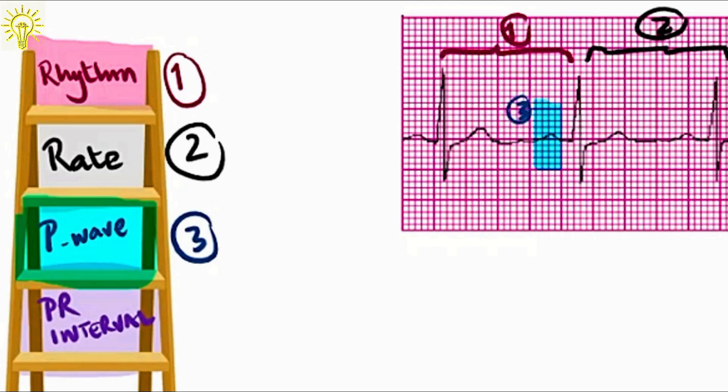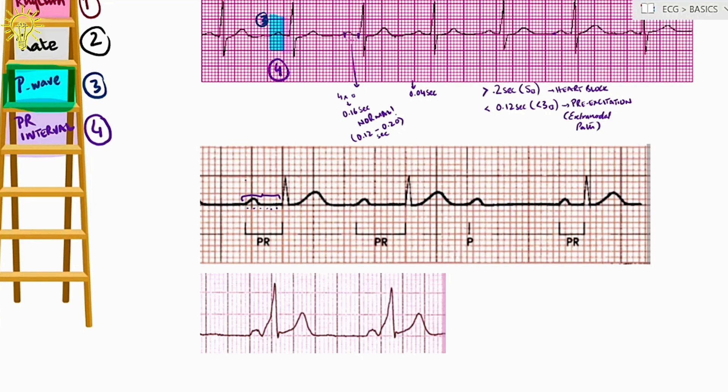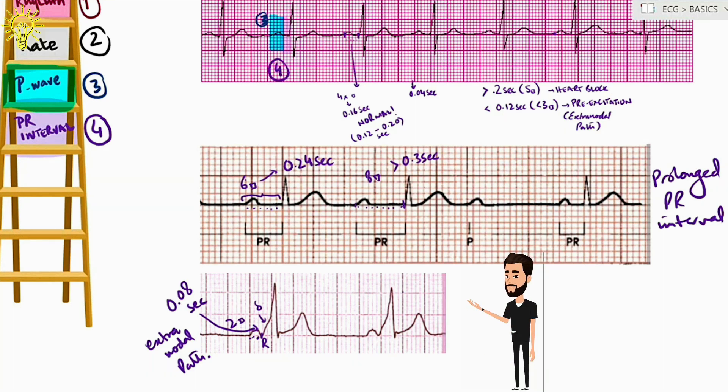Step 4: The PR interval. Normal PR interval is 0.12 seconds to 0.2 seconds. This makes three to five small boxes between start of P to the start of Q. Like here, it is four small boxes. So, 0.16 which is normal. In the second ECG, you can see six small boxes making PR interval. So, it is type of a heart block. In the last ECG, the PR interval is barely two small boxes. Hence, a shortened PR interval suggesting pre-excitation or as the term indicates, excitation of ventricle before normal time which can only happen if we remove the AV node delays. In other words, extra nodal pathway of impulse transmission.